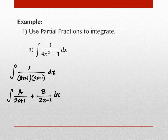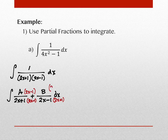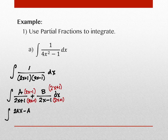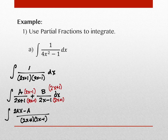That feels a little counterproductive, but bear with me. We're going to rewrite the numerator: I'll have 2Ax minus A. And because the denominators now match, I'm going to write them over a single denominator (2x + 1)(2x − 1) — or 4x² − 1. Then I add plus 2Bx plus B.